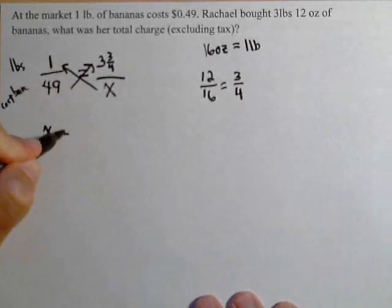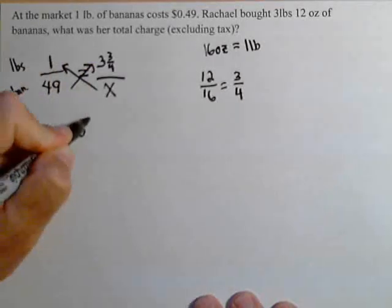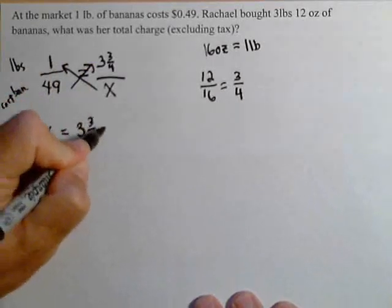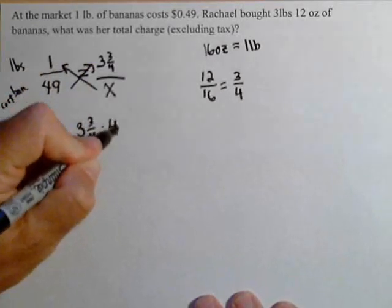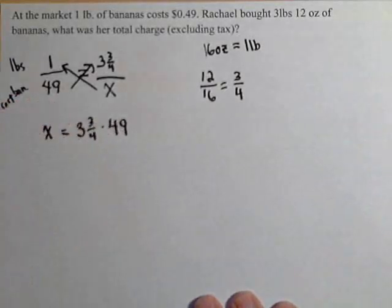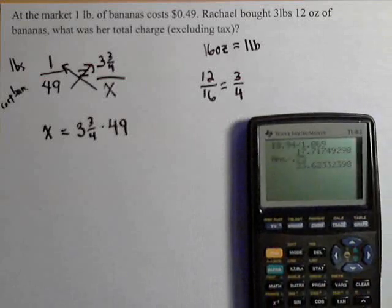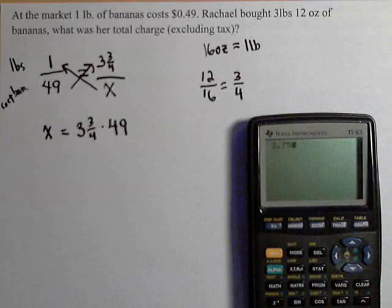What we're doing is x equals 3 and 3 fourths times 49. We need to go ahead and solve this. Use our calculator, 3 and 3 fourths. We're going to use 3.75 times 49.